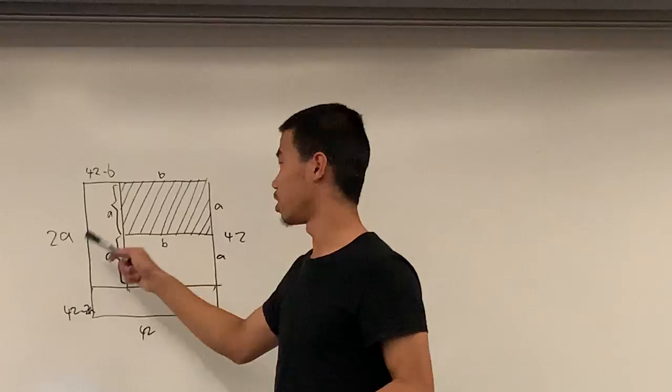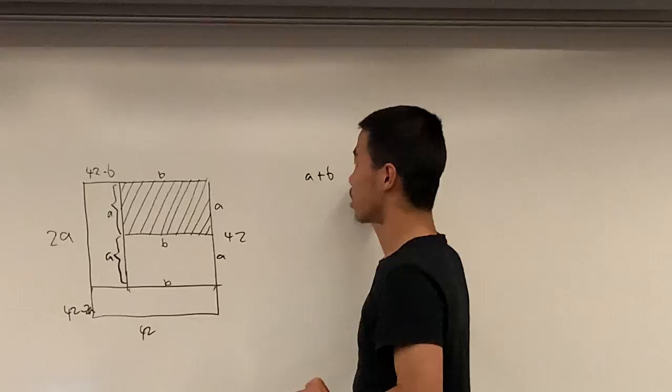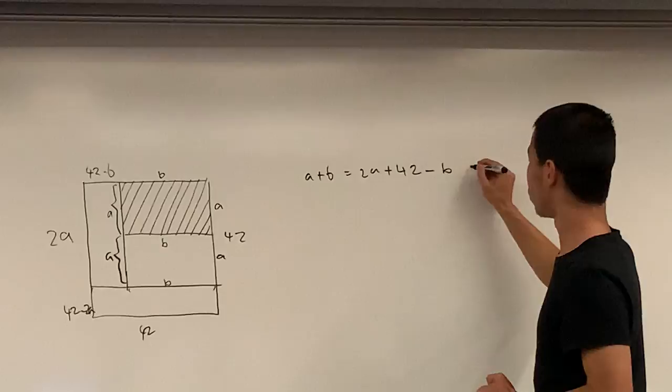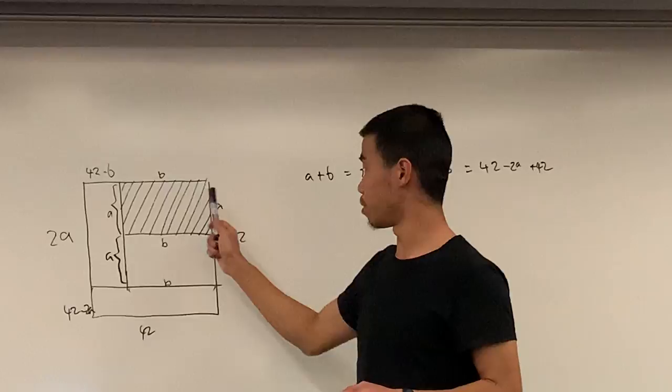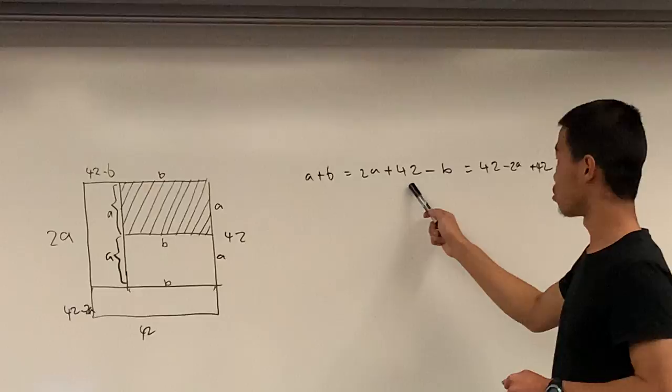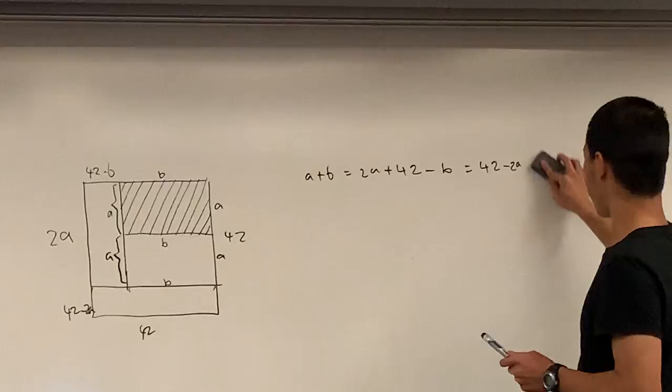So the perimeter of this one is equal to the perimeter of that one, it's equal to the perimeter of that one. So that means A plus B is equal to 2A plus 42 minus B, which is equal to 42 minus 2A plus 42, which is just 84 minus 2A. It's 84.